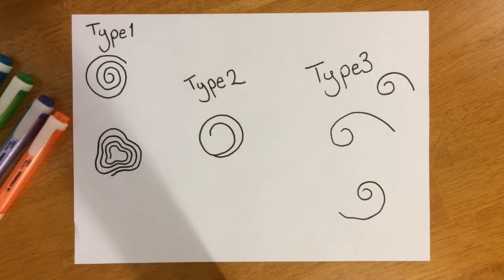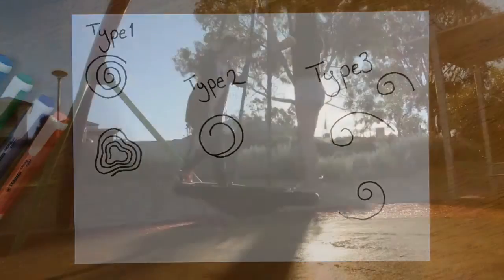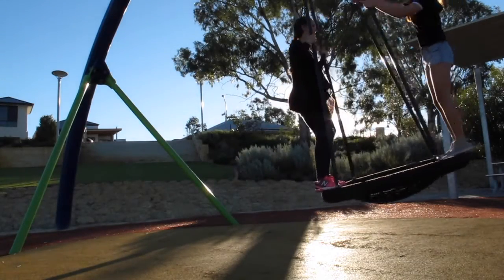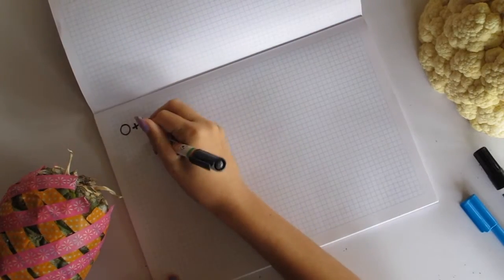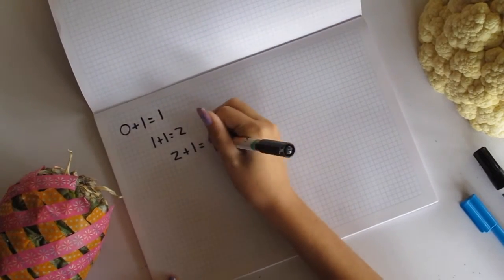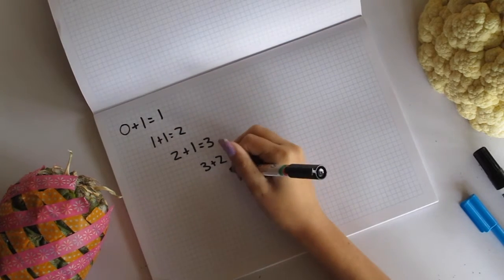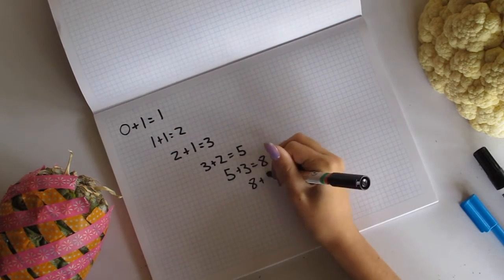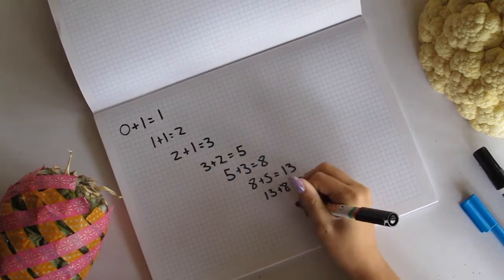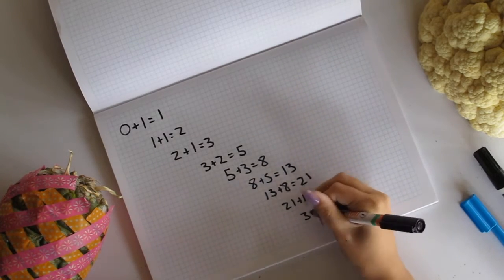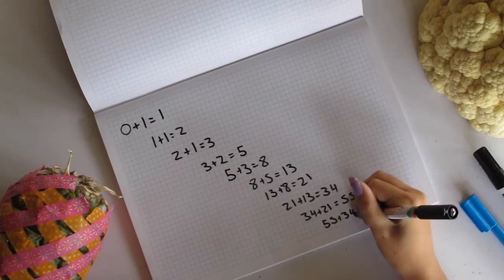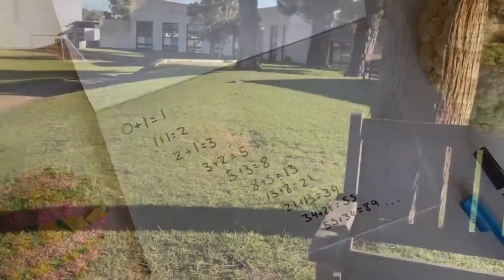Wait, what is the Fibonacci thing? The Fibonacci sequence is a series of numbers found by adding up the two numbers before it. For example, 0 plus 1 equals 1, 1 plus 1 equals 2, 1 plus 2 equals 3, 2 plus 3 equals 5, 3 plus 5 equals 8, 5 plus 8 equals 13, 8 plus 13 equals 21, 13 plus 21 equals 34, 21 plus 34 equals 55, 34 plus 55 equals 89, and so on.